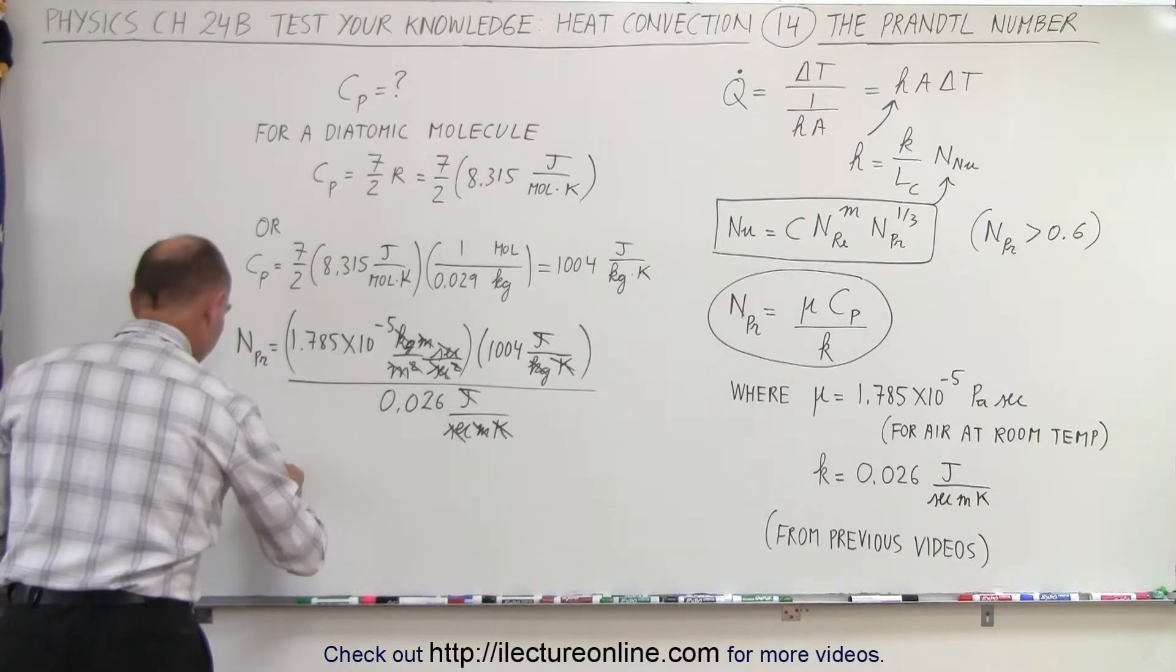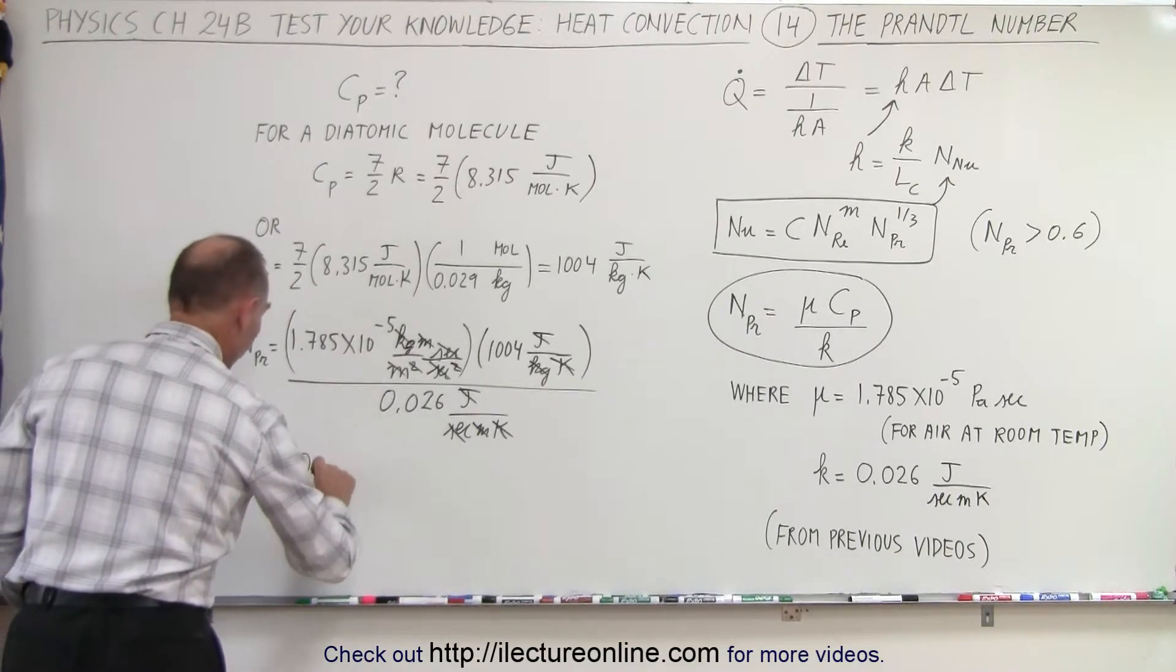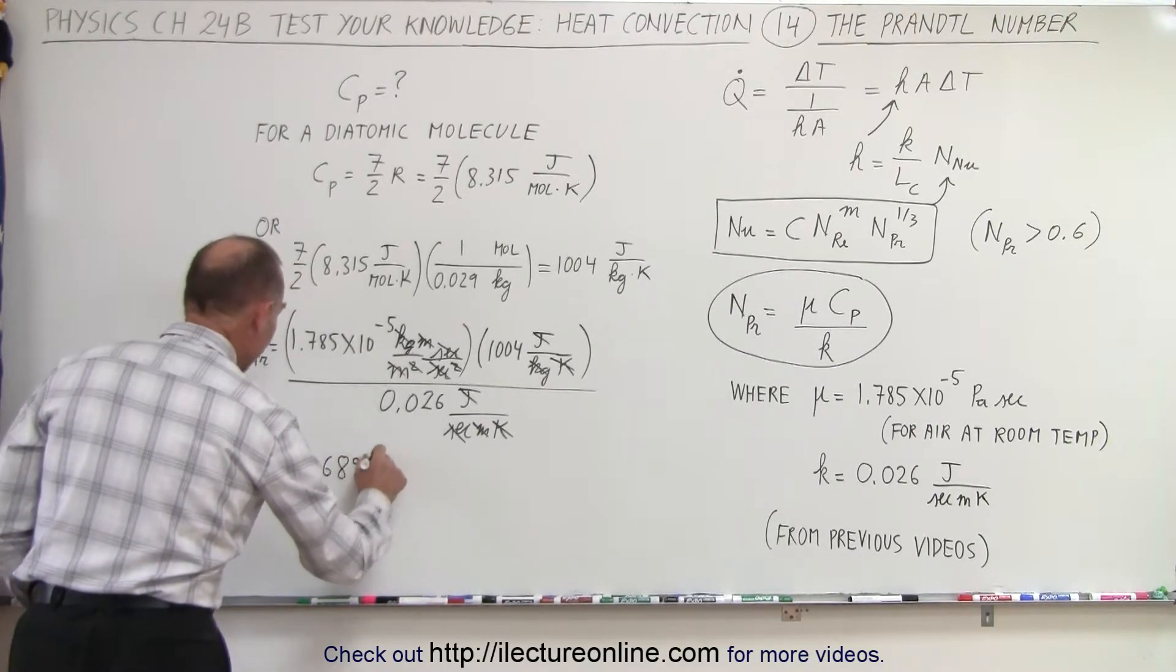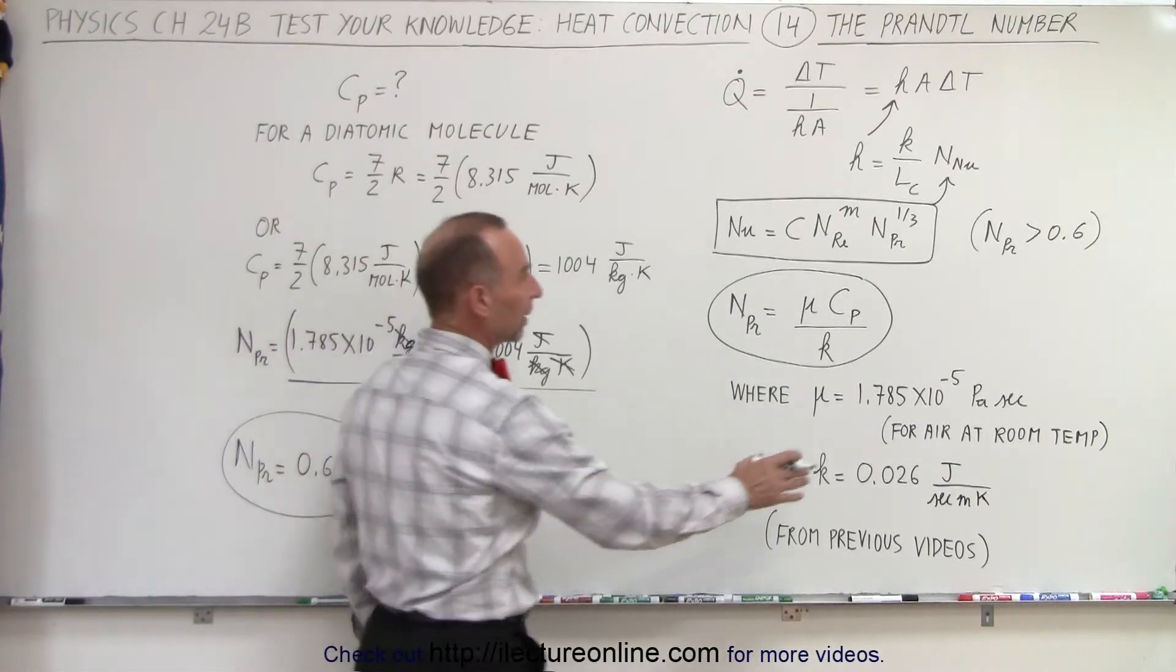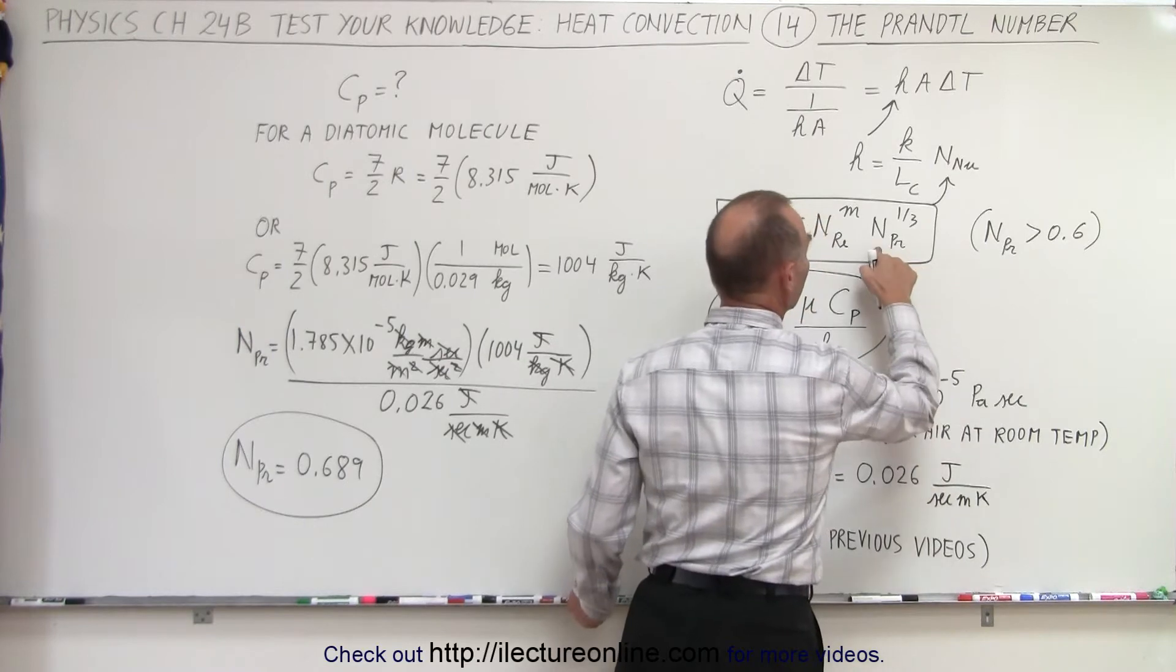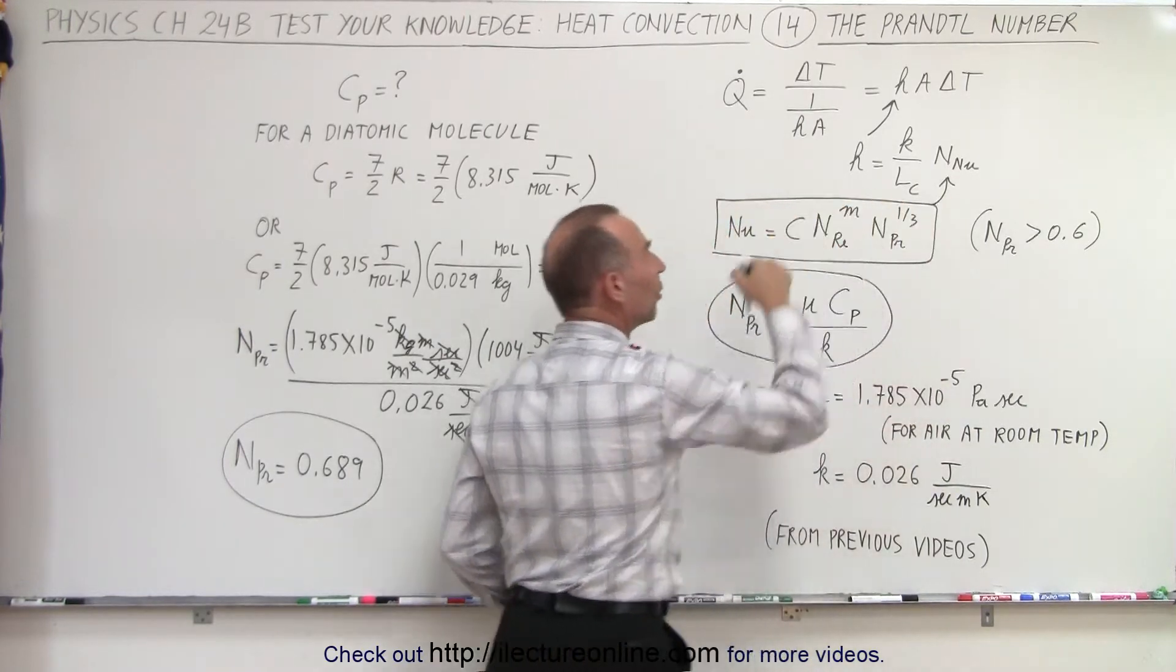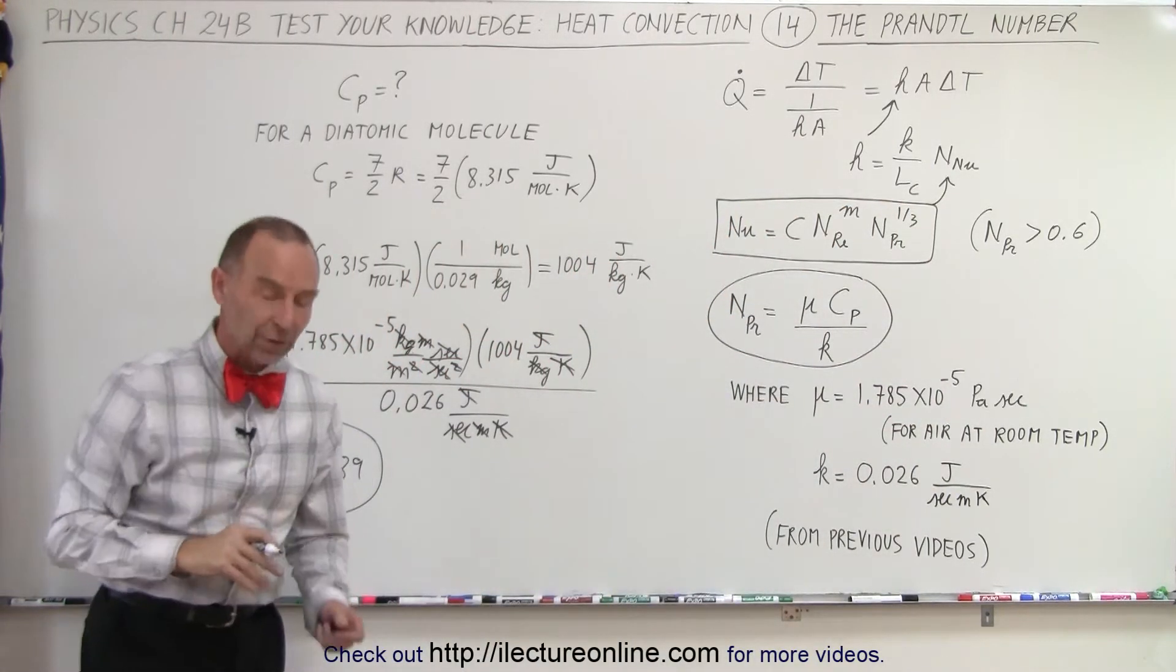So the Prandtl number is equal to 0.689. And that is the value that is acceptable since it's bigger than 0.6. We then put it in here raised to the one-third power which is what we saw in the previous videos.